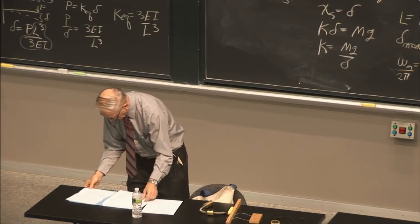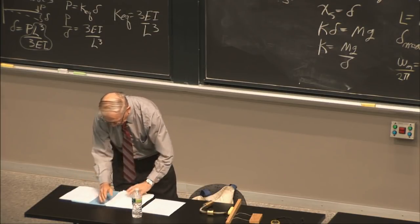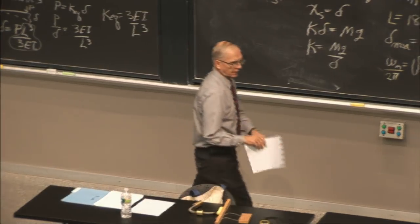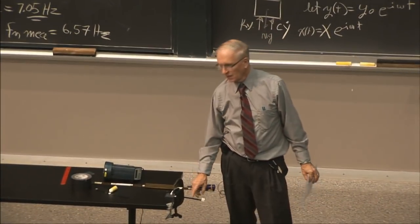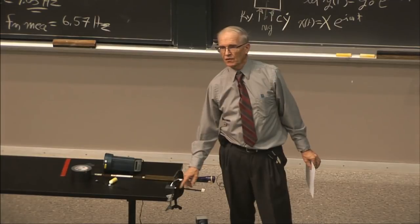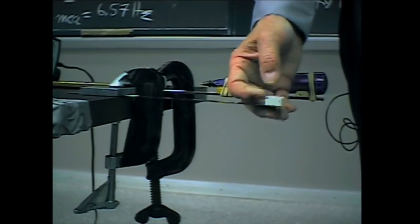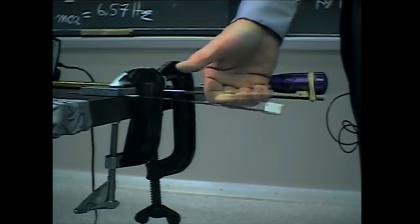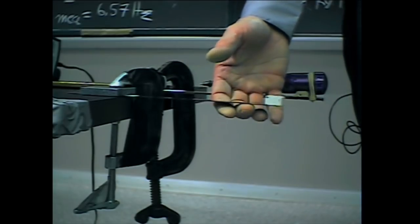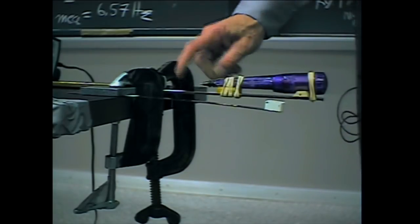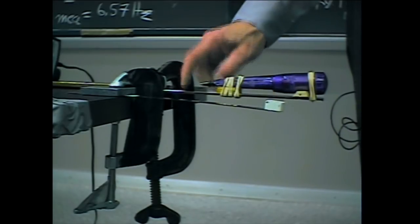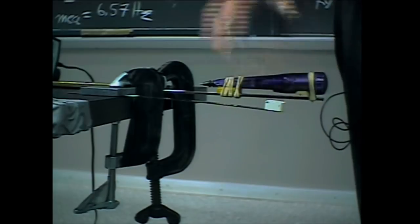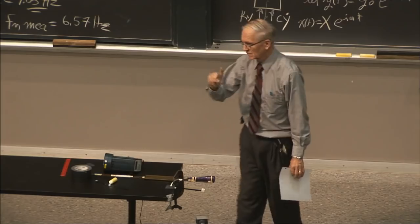So we have done almost everything we set out with today. We said there are three ways to fix this problem — and came up with a fourth. The piece we haven't addressed yet is spring-supporting the source so that it doesn't transmit vibration to the table. Let's look into that now.